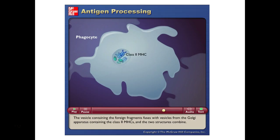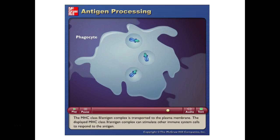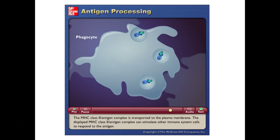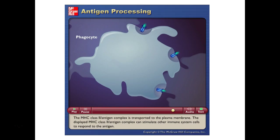Phagocytic cells like macrophages and dendritic cells purposely engulf stuff from the outside, and they package it with MHC class 2 — a different communication signal. They're saying, 'This came from the outside — I gobbled it up, it's foreign, does anybody recognize this?' Hopefully a set of T cells will recognize it and come along and interact with it. Your cells are constantly doing this antigen presentation.